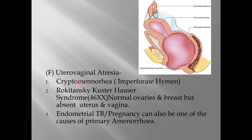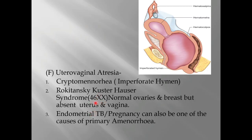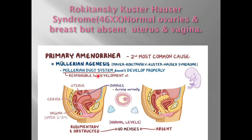In imperforate hymen, the girl is getting menstruation but it is collecting inside only — it is not coming out — so it is called cryptomenorrhea, meaning hidden menstruation. The second condition is Mayer-Rokitansky-Küster-Hauser (MRKH) syndrome. In this condition there is no chromosomal anomaly; the girl has 46 XX chromosomes with normal ovaries and breast development, but she does not have a uterus and vagina. This happens because the Müllerian duct system does not develop properly — it is a congenital anomaly and the second most common cause of primary amenorrhea. The vagina and uterus may be in rudimentary form or completely absent.